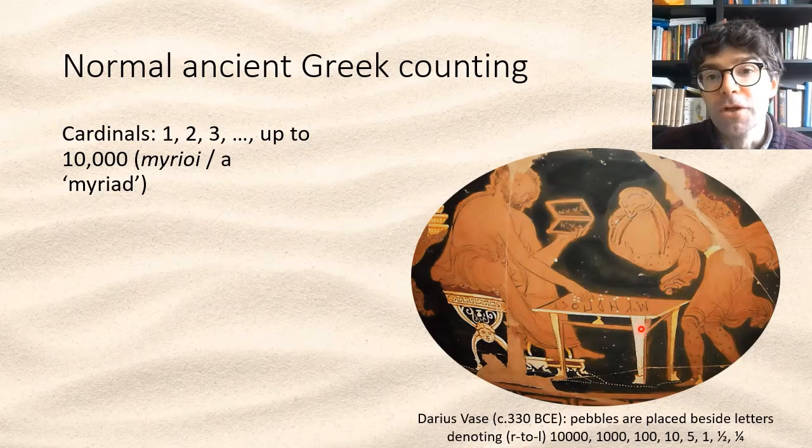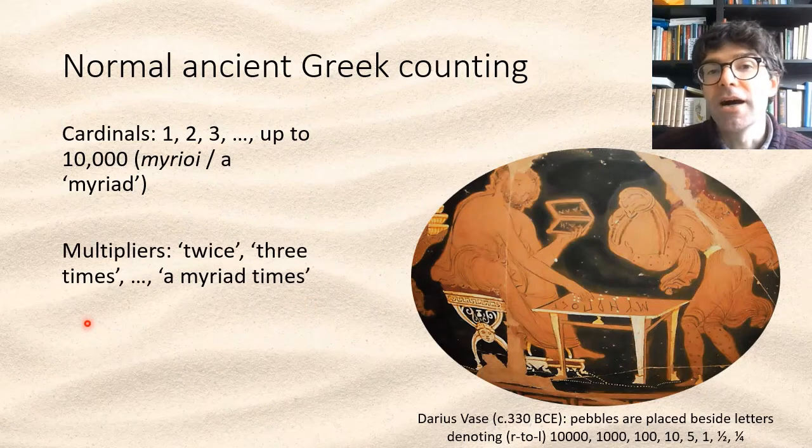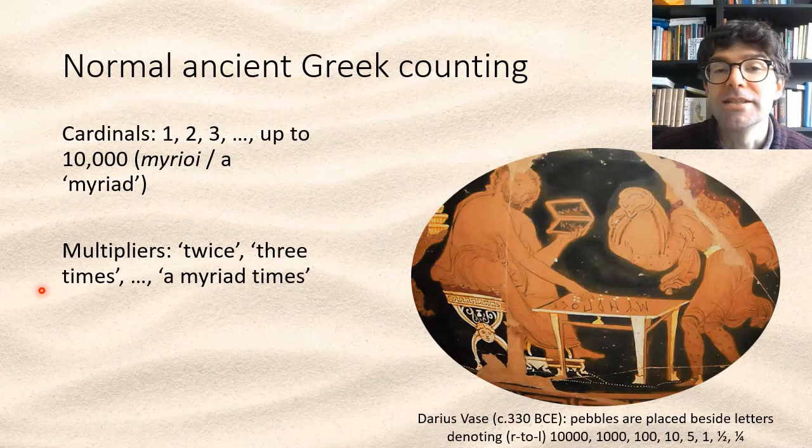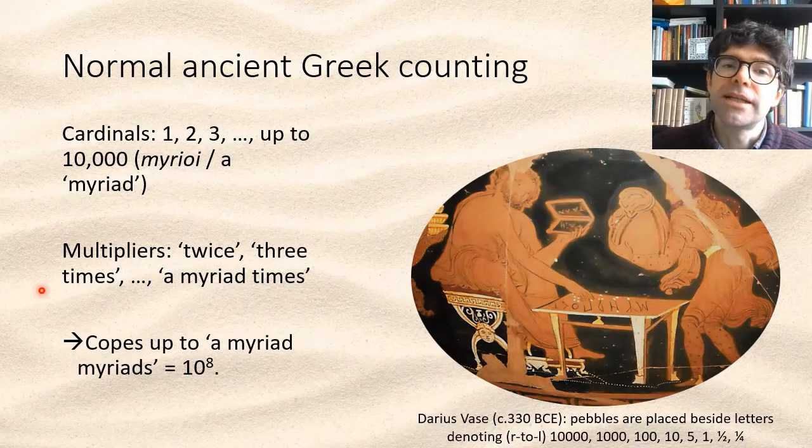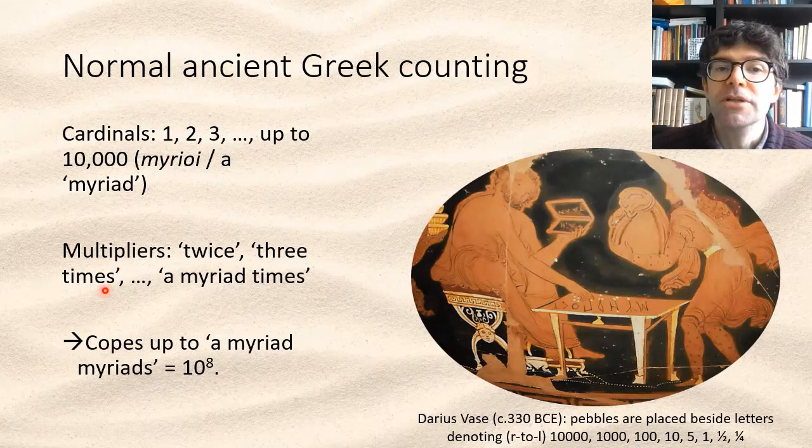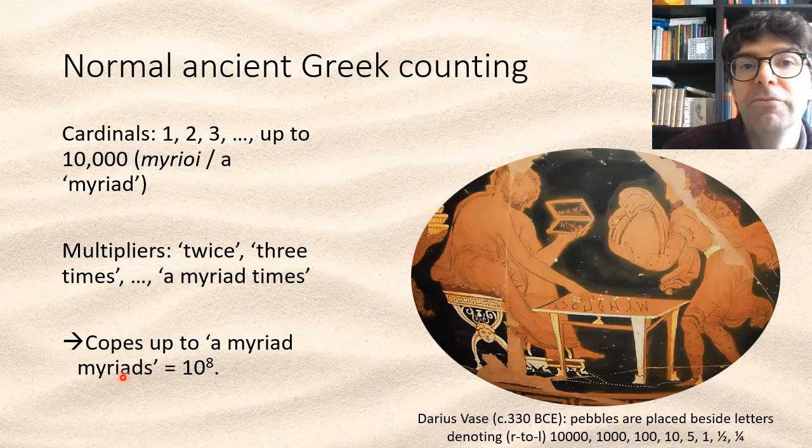To describe what we would call a million, you would have to use a word meaning a hundred times, and say a hundred lots of a myriad, and that's more or less how you still say it in modern Greek. Archimedes therefore considered that the existing language could cope well with numbers up to a myriad lots of a myriad, or in our terms ten to the power eight, a hundred million.